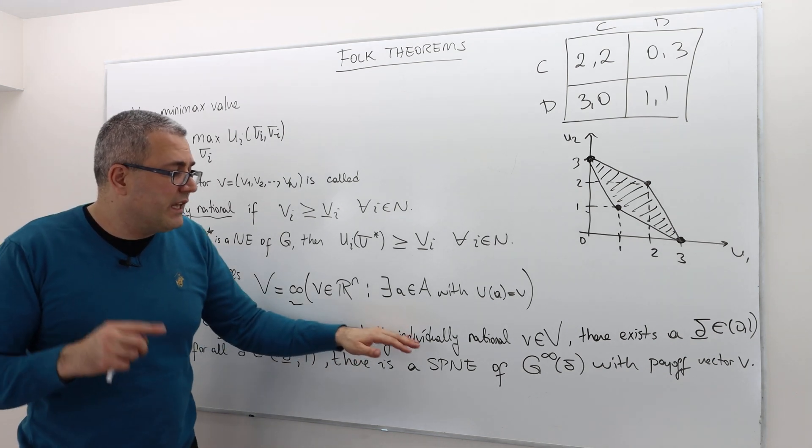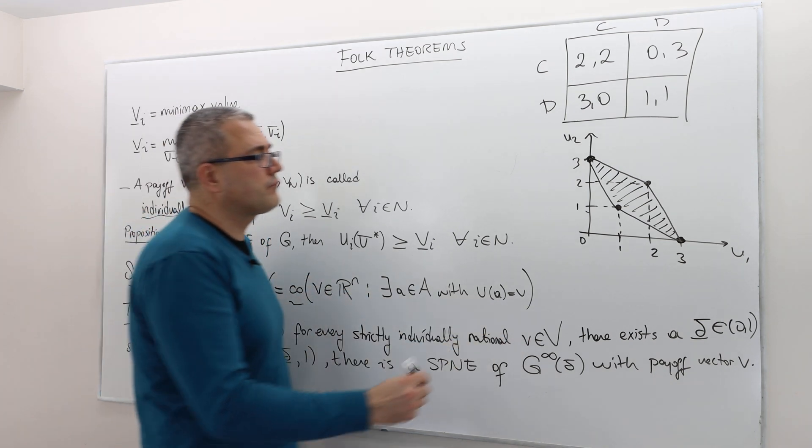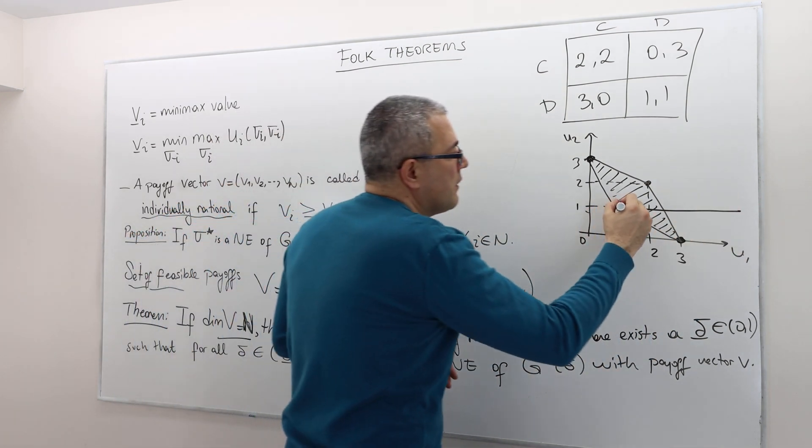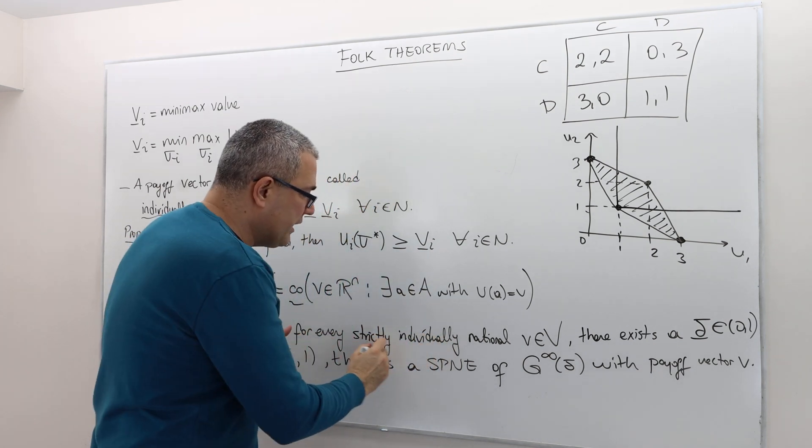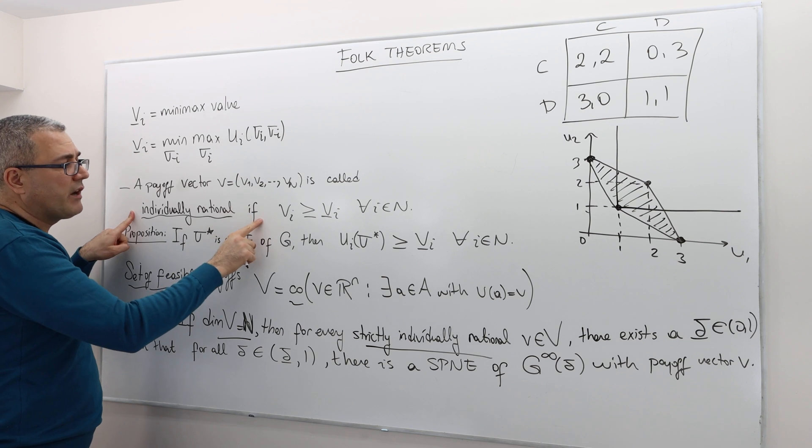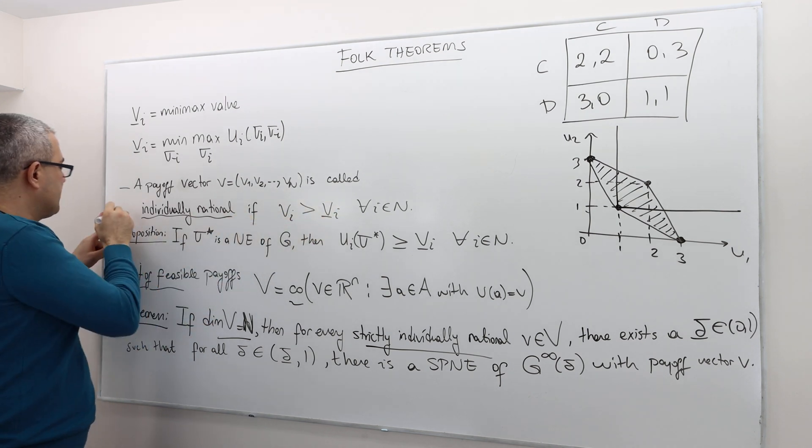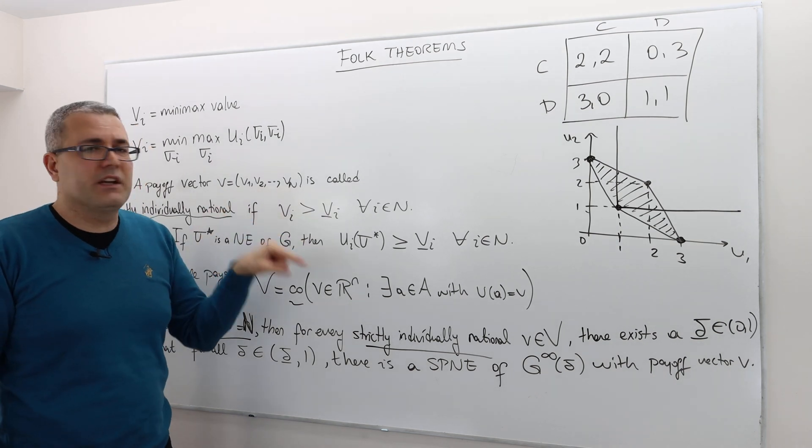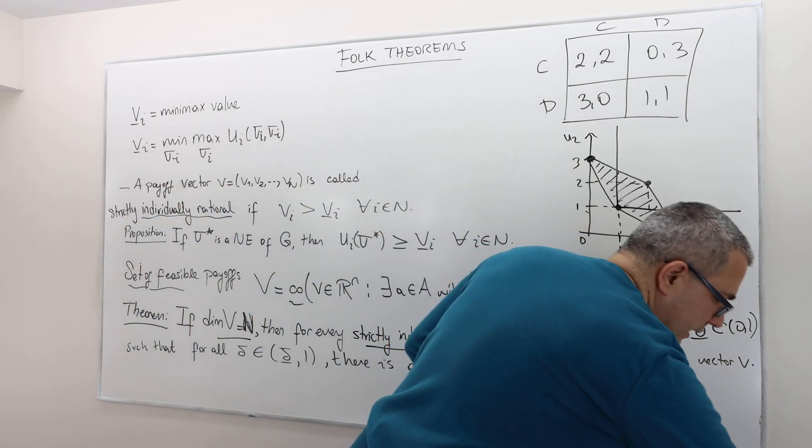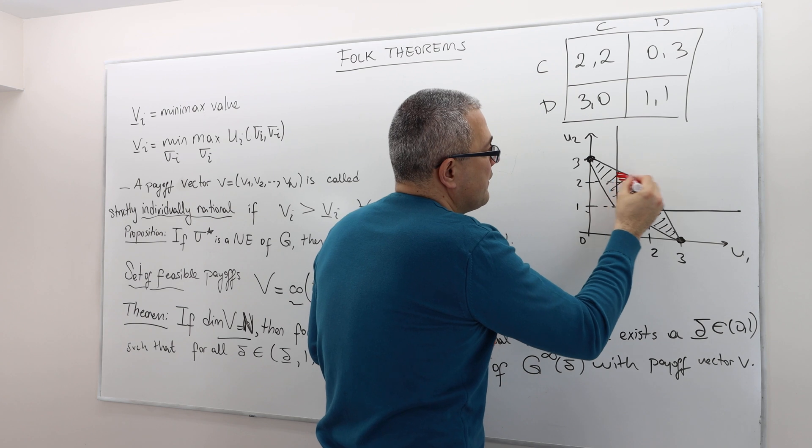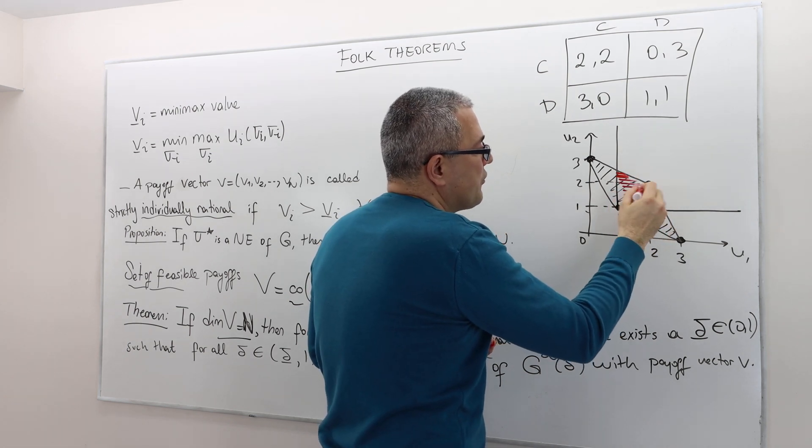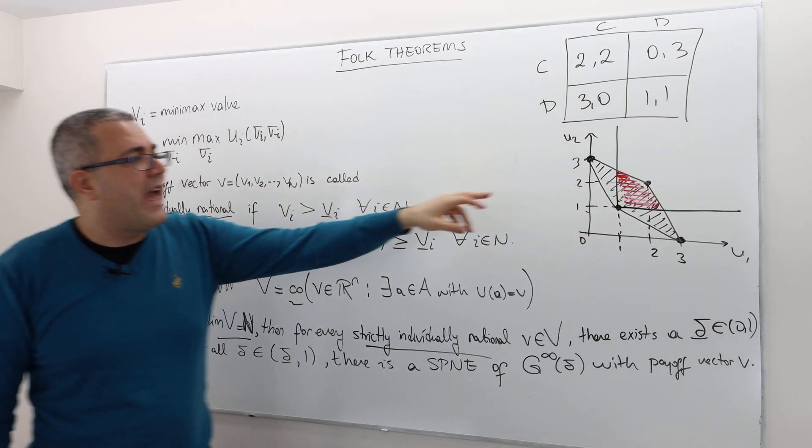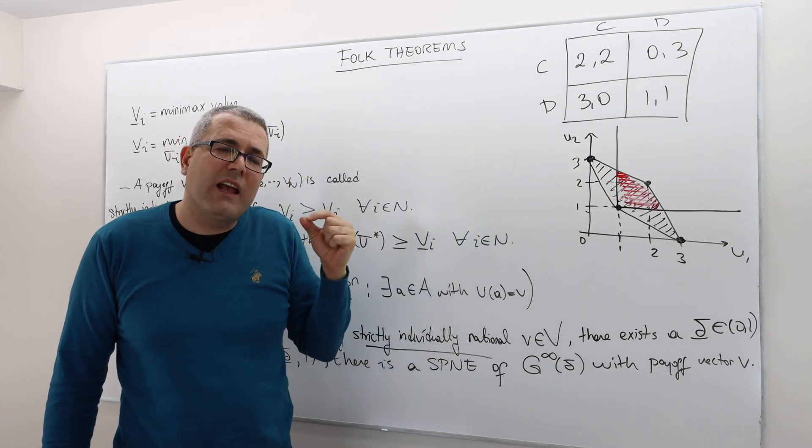Then for every strictly individually rational payoff vector, meaning, remember in this game, one is the min-max payoff for both players. So it says strictly individually rational. So here individually rational is this. Strictly individually rational basically means each player gets strictly higher payoff. All right. So basically this area is the, not the boundaries, is the strictly individually rational set of payoffs.